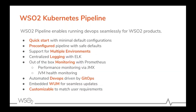The WSO2 Kubernetes pipeline enables running DevOps seamlessly for WSO2 products running on Kubernetes. It is easy to start with minimal safe default configuration. Through this, it is possible to deliver changes and updates across multiple environments and observe logs and monitor the performance of each environment. Based on a GitOps model, the WSO2 Kubernetes pipeline uses Git as the source of truth for development deployments.